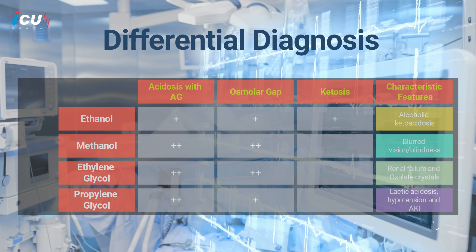In addition to metabolic acidosis with a high anion gap and high osmolar gap, characteristic features for methanol poisoning include the blurred vision that our patient had, or even blindness.